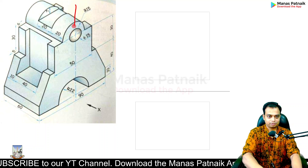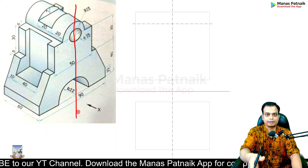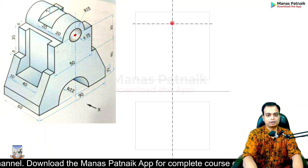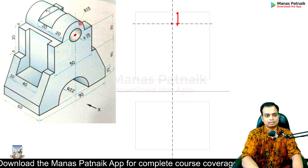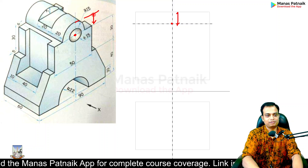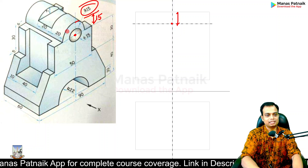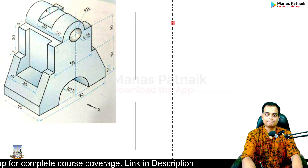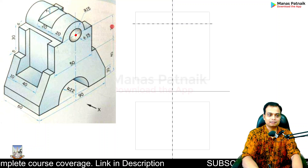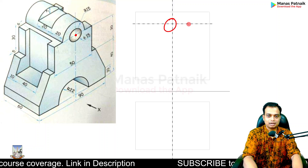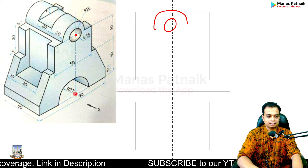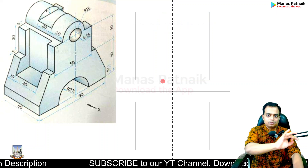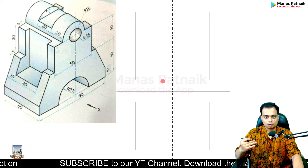Now make the center line. This point is 15 millimeters below — that is the radius of the semicircle — so come down 15 millimeters to locate the center for the circle and the semicircle. This same point serves as the center for the semicircle we are going to draw accurately.